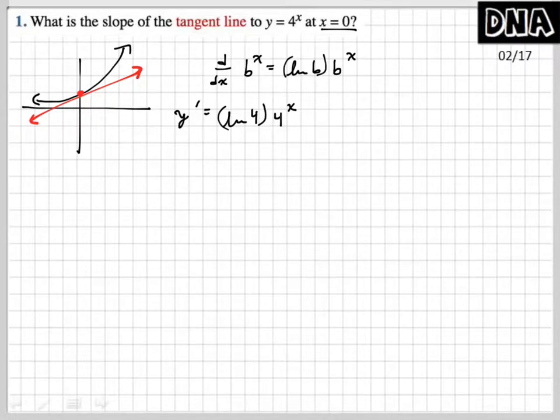Now if you wanted to find the slope at x equals 0, then you're going to plug in 0 to your y prime function, which is natural log of 4 times 4 raised to 0 power,